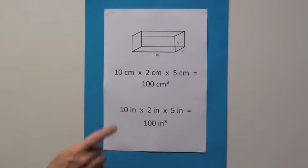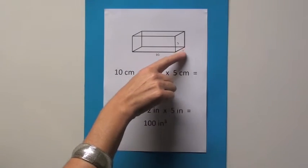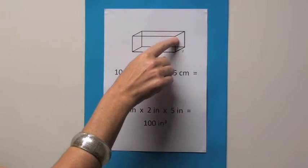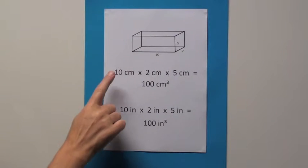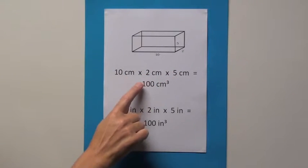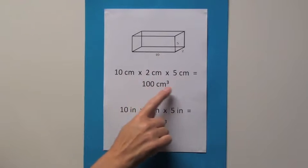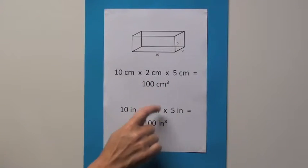Now if we look at this example, we can see that the length of this shape is 10, the width is 2, and the height or depth is 5. So we need to multiply these numbers by each other. We can say 10 times 2 times 5, and the total there is 100. And depending whether we're measuring in centimeters or inches will give us our final total.